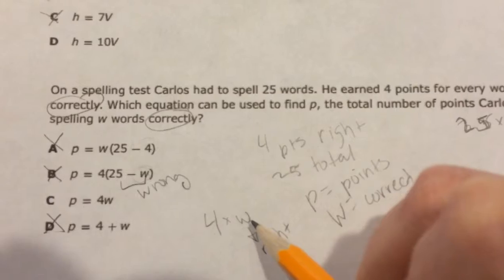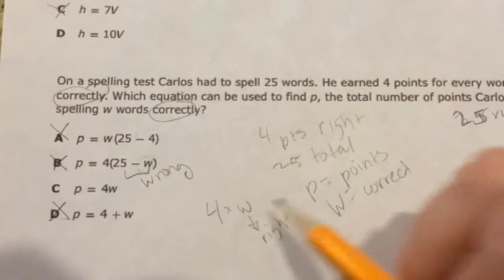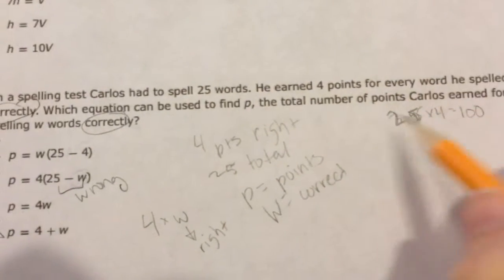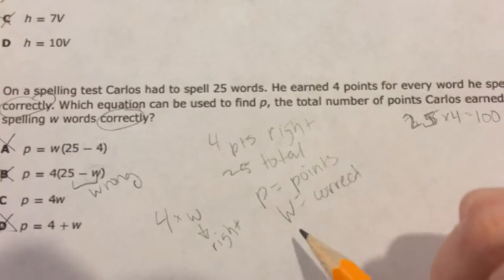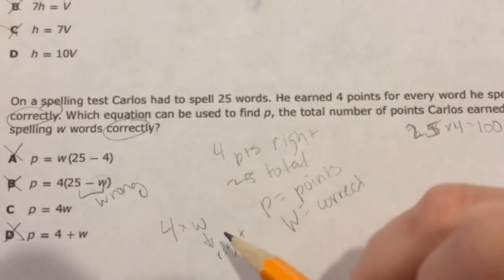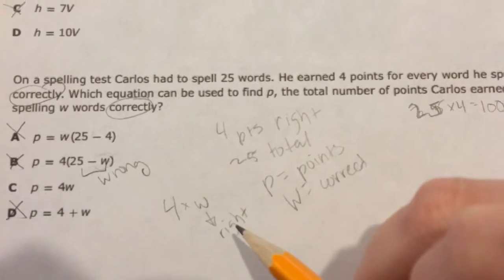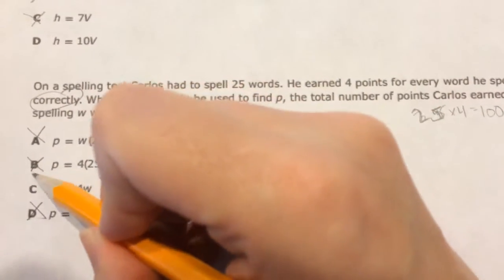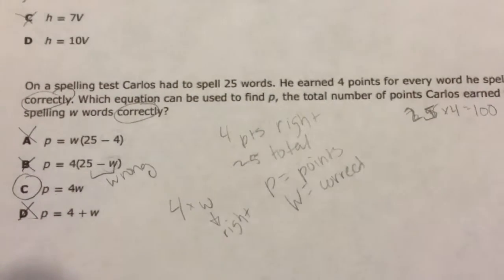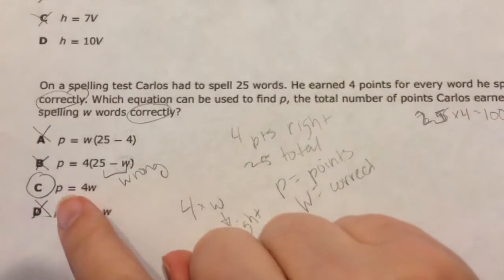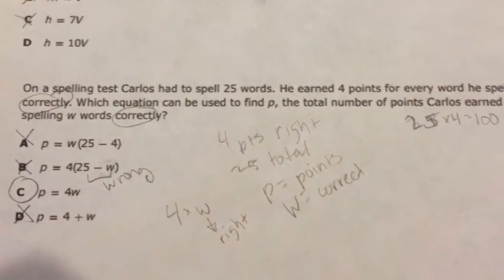Well, that would kind of make sense because if he got all 25 of them right, 4 times 25 is 100 over here, and that would be a perfect score. If he got 20 right, 4 times 20 would be 80, so 80 would be his score. Oh, that makes sense. So the answer is C. Number of points is equal to 4 times the number he got right.